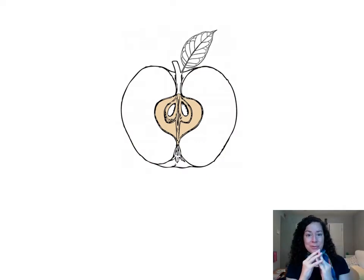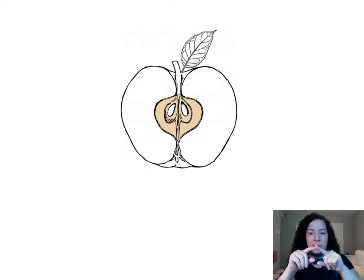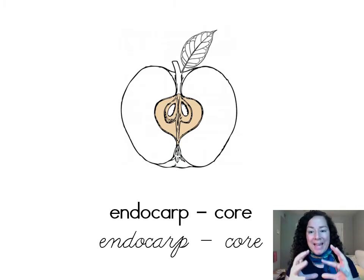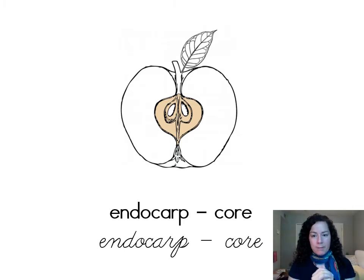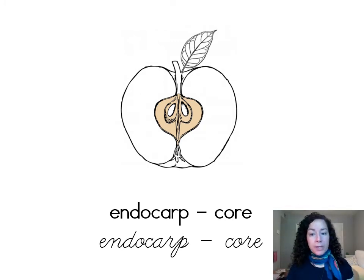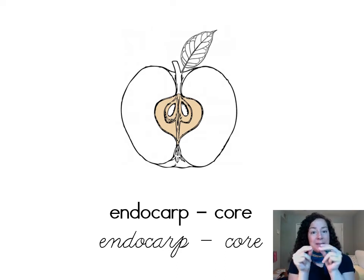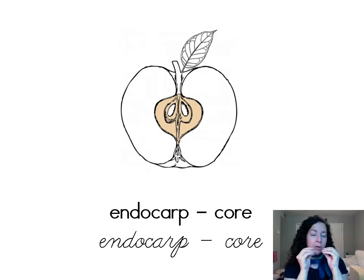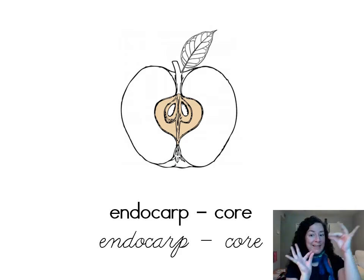Inside the fruit, surrounding the seeds, we have the endocarp. Endo means in, and endocarp is also known as the core, and it's the tough, central part of many fleshy fruits. Usually, when we're eating an apple, this is the part that we leave.